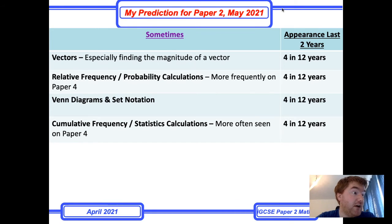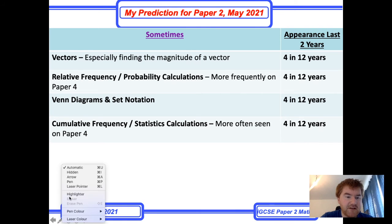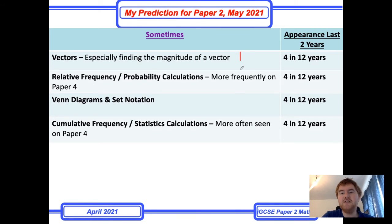Vectors is the first thing to mention, particularly finding the magnitude of a vector. Be aware—sometimes they'll write the notation using the modulus sign, sometimes they'll use the word magnitude. I noticed that on the November 2020 paper. Make sure you know how to do that—it's an easy couple of marks using Pythagoras.